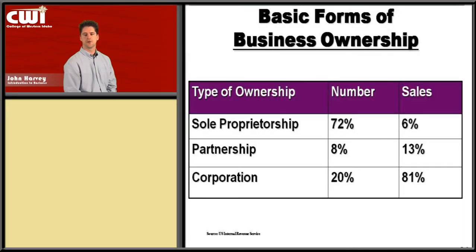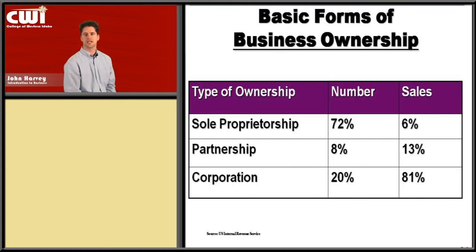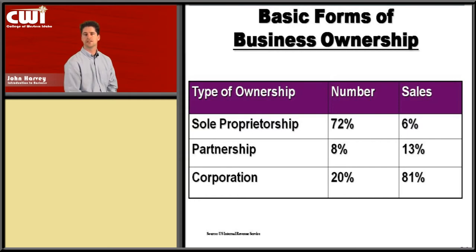The basic business forms are a sole proprietor, partnership, and a corporation. The large majority of businesses are sole proprietors — roughly around 70%. However, when you start counting sales, the large majority of sales are actually coming from corporations. There's a huge disconnect, and part of that is the fact that when you start a business, you will start in one form and then transition into another. This is an evolution in your business — you may start in one form and modify or change over time depending on your size or needs.